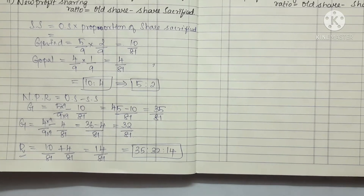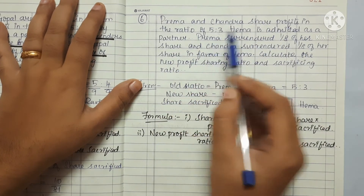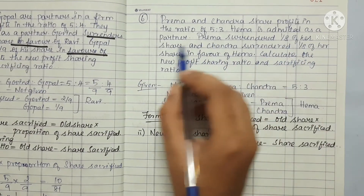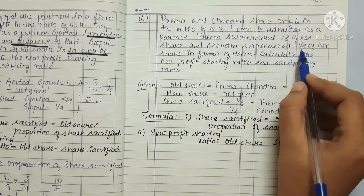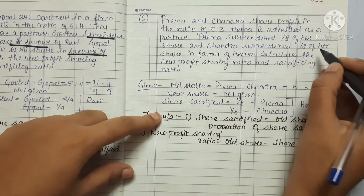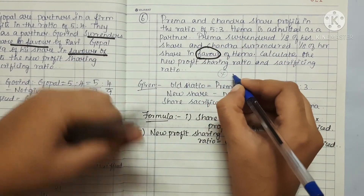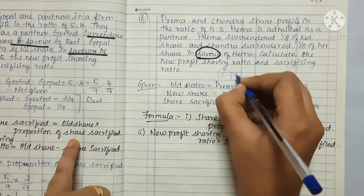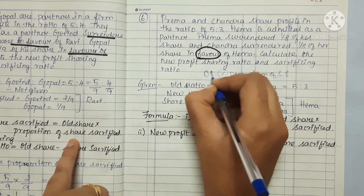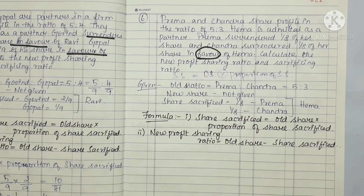Now let's look at the next question. Prema and Chandra share profit in the ratio of 5 to 3. Hema is admitted as a partner. Prema surrenders 1 by 8 of her share and Chandra surrenders 1 by 8 of her share in the favour of Hema. Since we see the word 'favour,' the formula is old share multiplied by the proportion of share sacrificed.